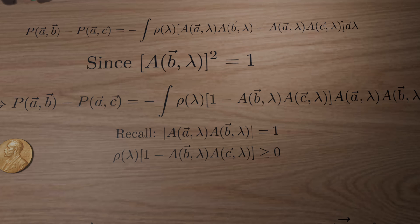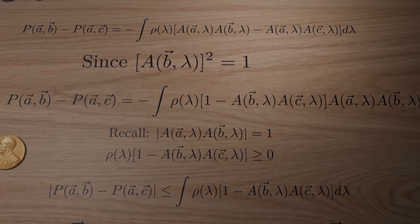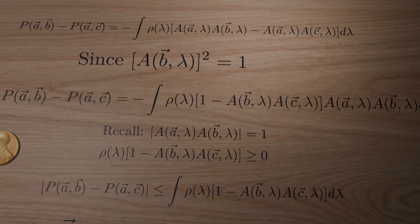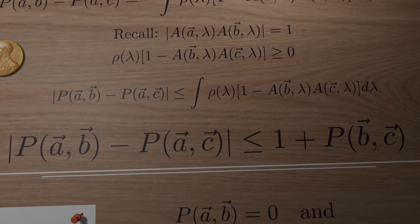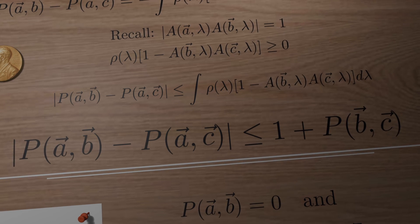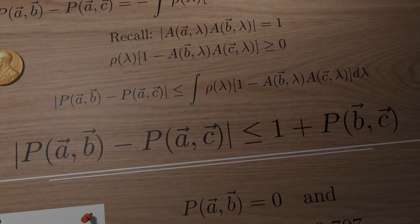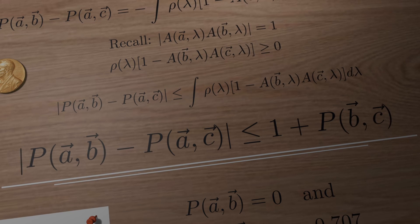So the integral above can now be rewritten by taking the absolute value of both sides. Or even more compactly, the absolute value of P of AB minus P of AC is always less or equal to 1 plus P of BC. This is the famous Bell's inequality, which we have just derived.